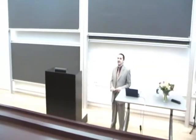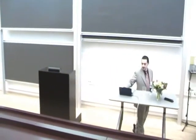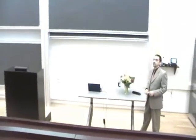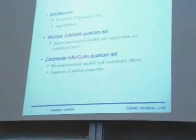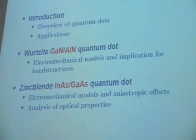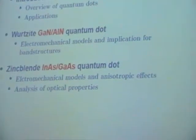Thank you to everybody for being here today. I will start with the introduction — a short overview of quantum dots and their possible applications. Then I will mainly focus on two different quantum dot structures: wurtzite-type gallium nitride / aluminium nitride quantum dots, and zinc-blende marcasite gallium arsenide quantum dots. I will show electromechanical models for both structures, their implications for band structure, and analysis of optical properties. Finally, I will give some conclusions.